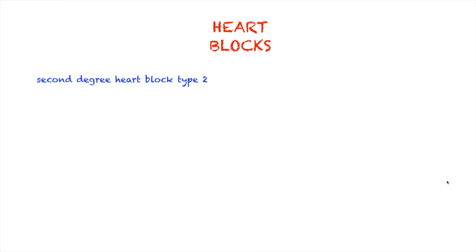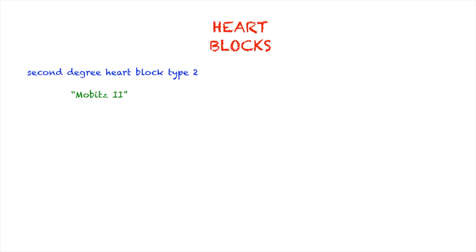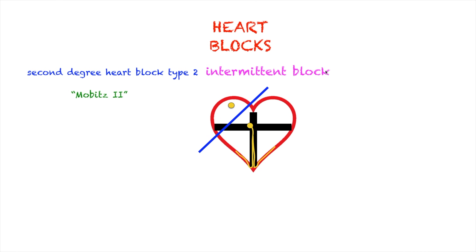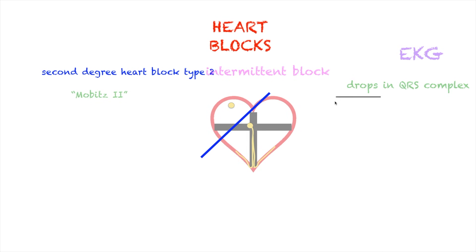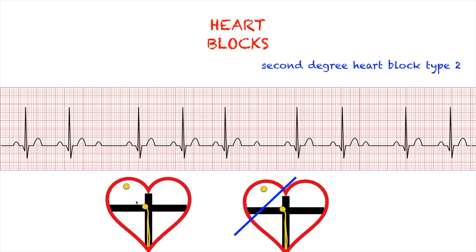Next up would be your second degree heart block type 2, also known as Mobitz 2. In this heart block, there is an intermittent block between your SA node and the AV node. Note that the block is complete — not partial, but complete. As a result, the EKG will show drops in your QRS complex. When there is no block yet, you will start with a normal EKG rhythm. However, once the block takes place, the QRS drops. As you can see, there's a P wave but no QRS complex — there's a drop here and a drop there. There's a P wave, T wave, and your P wave again. The way you're going to remember this is 'normal, normal drop,' referring to the normal PRIs before your QRS drops.